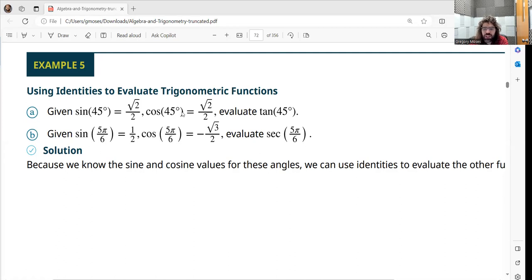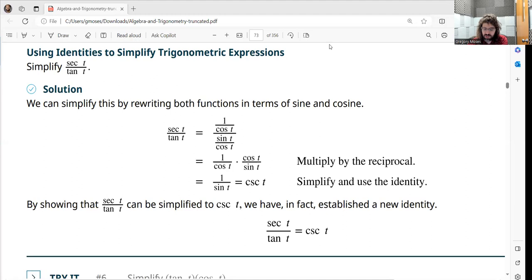But, you know, we've done examples, find the tangent of 30 degrees using the fact that you know the sine of 30 and the cosine of 30. So this doesn't need to be dwelled on.